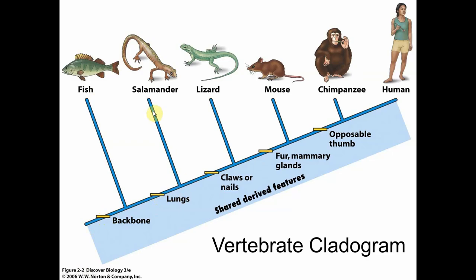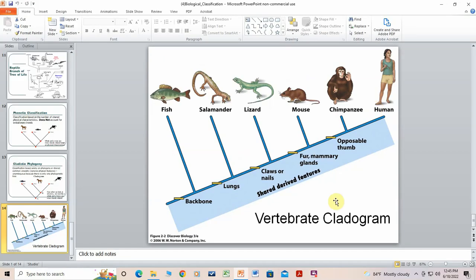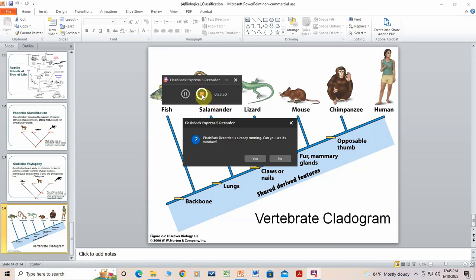Reading the vertebrate cladogram: at the bottom is a common ancestor that gave rise to all organisms shown. Over time, we evolved a backbone and fish split off. We evolved lungs and the capacity to live on land, and amphibians split off. We evolved claws and the amniotic egg — reptiles split off. We evolved mammalian characteristics — fur and endothermic metabolism — and mammals diverged. Eventually, primates evolved with opposable thumbs, and humans split off from the ape lineage. Very different physical characteristics, but cladistics ignores appearance and classifies solely on shared common ancestry. Next topic: evolution.